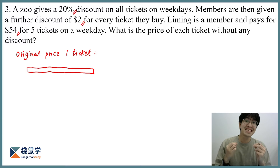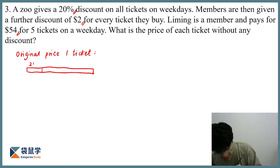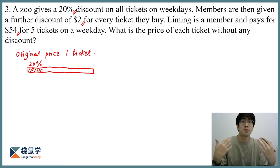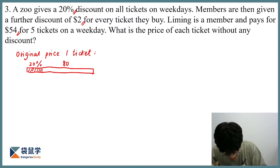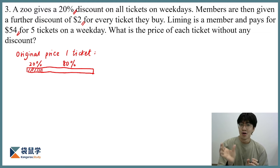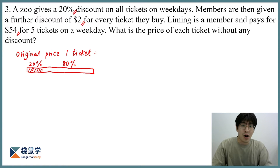On the weekday there is a 20% discount. Let me draw out that 20% discount so that this portion is discounted, and the remaining part — the part that we have to pay for — is 80%. If I can figure out the value for any of this percentage, then the problem is solved.